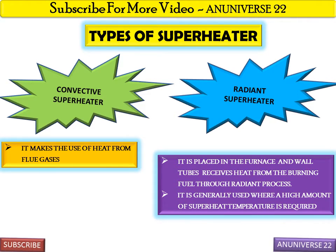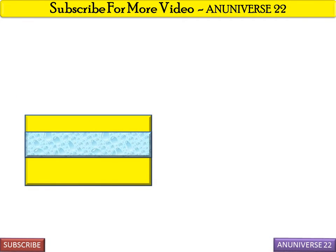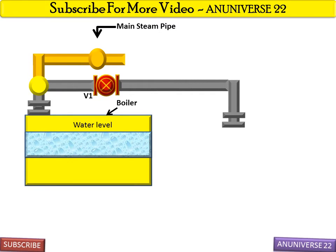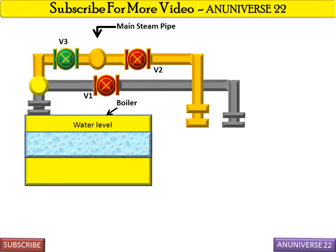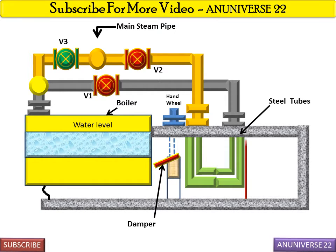Now we discuss the working and main components of the superheater. This is the boiler with the water level shown. There are pipe fittings, valve V1, the main steam pipe, valve V3, and valve V2, along with the arrangement of pipes. These are the steel tubes. This is the hand wheel generally used for positioning the damper, and this is the damper. The chimney is also shown here.